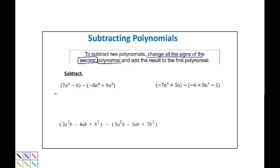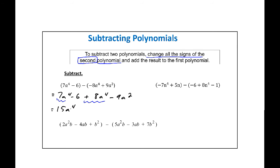So I'm going to write this first one. It is 7a to the 4th minus 6 — that's our first polynomial — minus (negative 8a to the 4th plus 9a squared) as our second polynomial. I'm going to rewrite this as 7a to the 4th minus 6, plus, taking the opposite of the second polynomial, 8a to the 4th minus 9a squared. Now I'll combine 7a to the 4th and 8a to the 4th to be 15a to the 4th. There are no other terms that can combine, so I'll bring down the minus 9a squared and the minus 6. This becomes 15a to the 4th minus 9a squared minus 6.